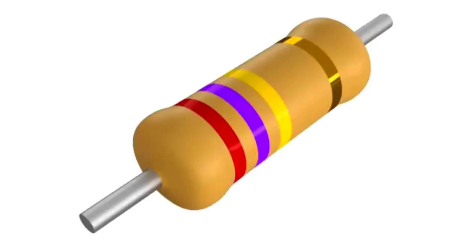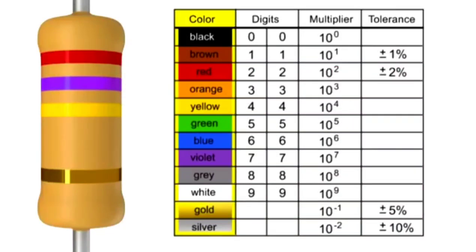Resistors are color-coded with markings or bands that allow you to quickly identify resistance values and tolerance. Using a color chart table will allow you to determine the value of any common 4-band resistor.